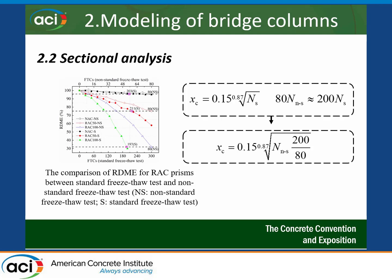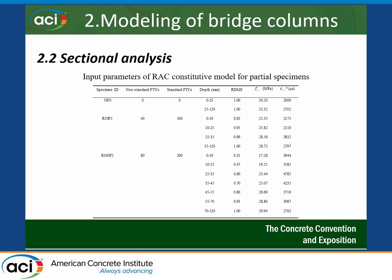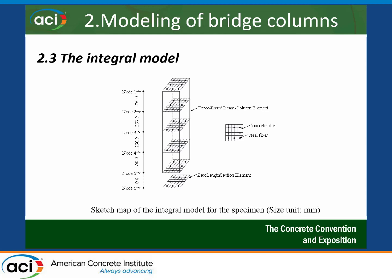For bridge column modeling, sectional analysis was carried out examining the relationship between the RDME and RC prisms subjected to freeze-thaw cycles, for both standard and non-standard cycles. Equations were developed for calculating freeze-thaw damage. Three different specimens — NF0, R50, and R100 — with different recycled aggregate replacement levels were used. A fiber modeling approach with distributed plasticity was adopted in OpenSees, using the concrete model from experimental results and the Steel02 model.